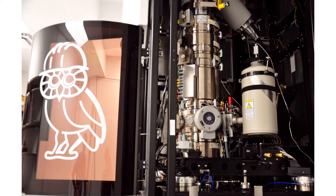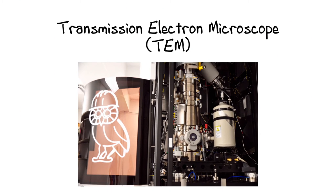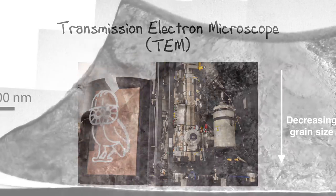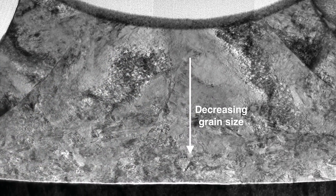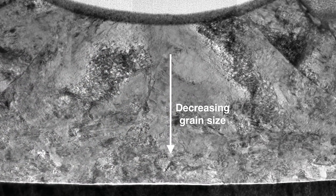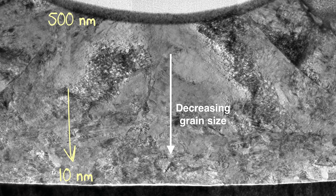Then, by examining this lamella at the atomic scale in a transmission electron microscope, we identified an extreme gradient nanograin structure, having grain sizes varying from 10 nm to 500 nm over a distance of 500 nm.